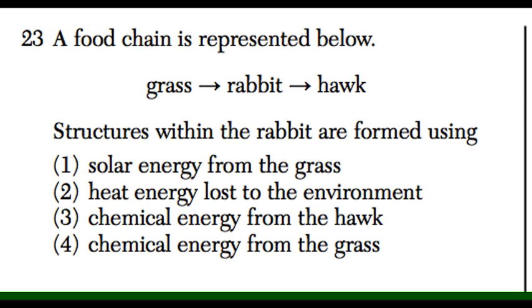Structures within the rabbit are formed using—that sounds a little bit confusing, but forget structures. Think about logic here. What type of energy do we get from grass? It would be chemical energy through the process of photosynthesis.